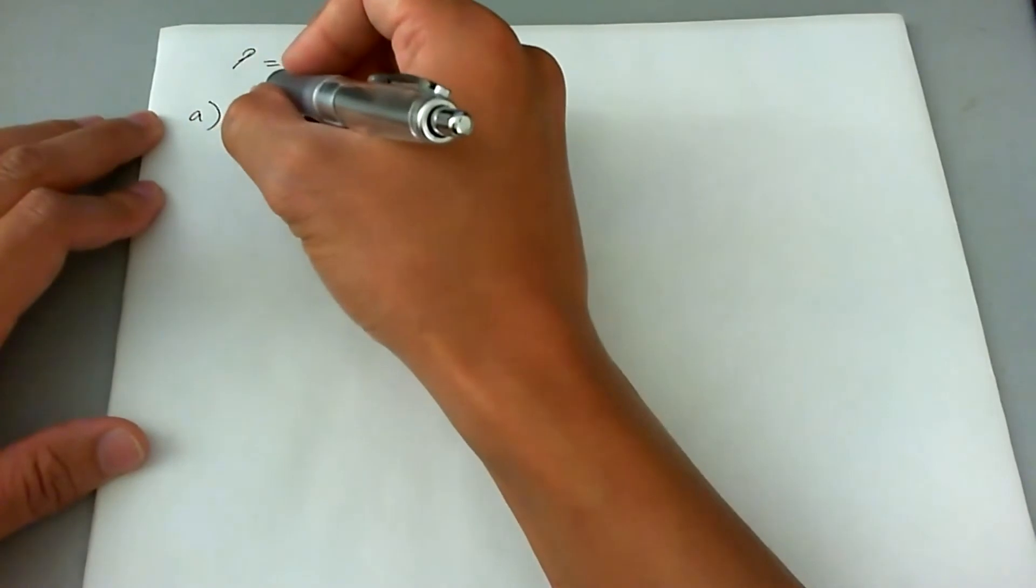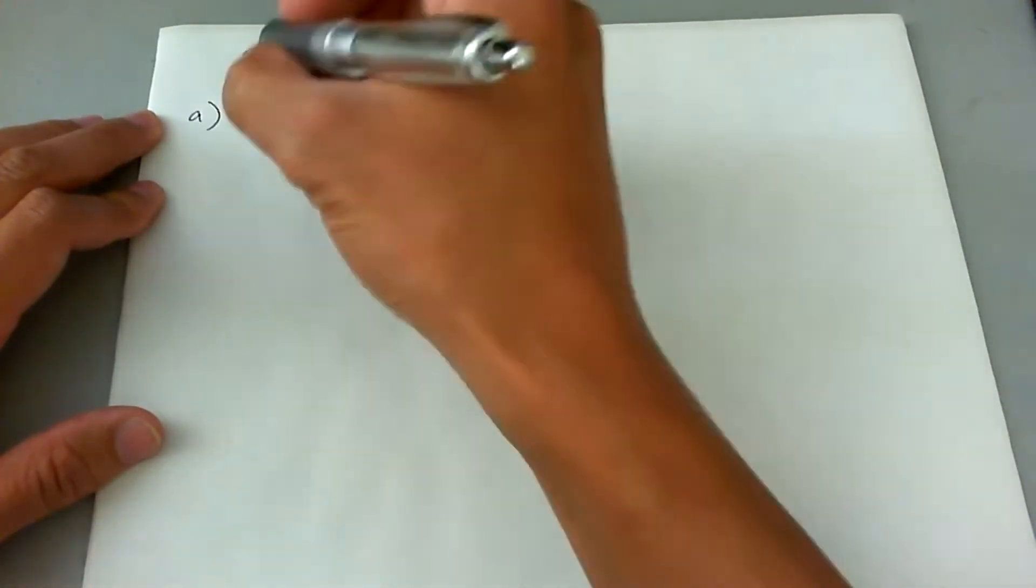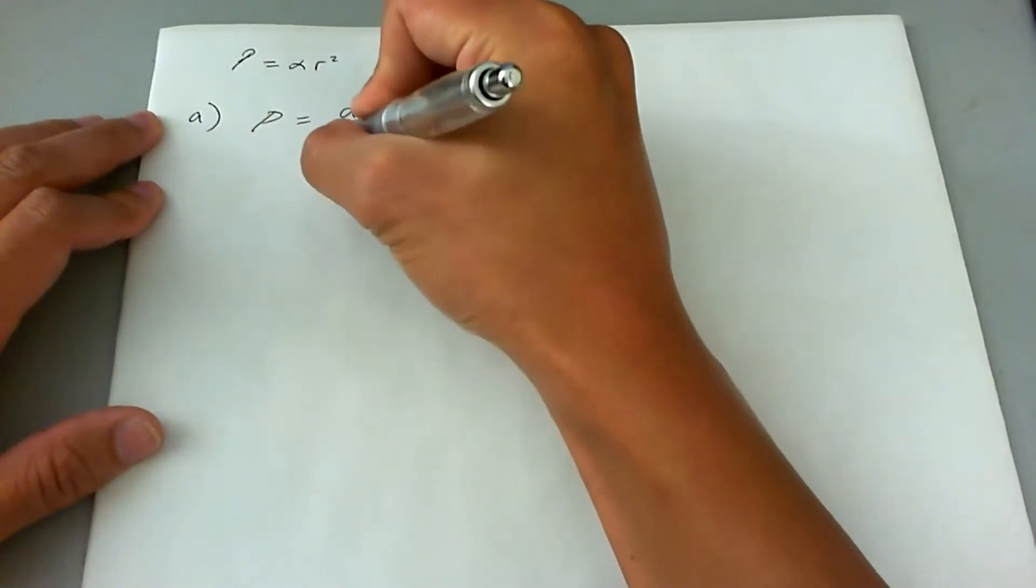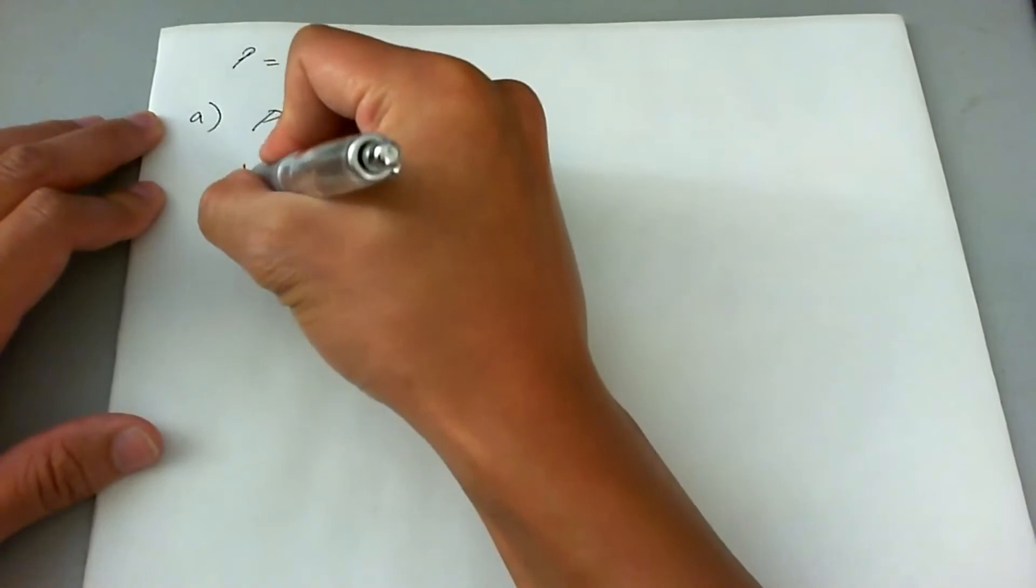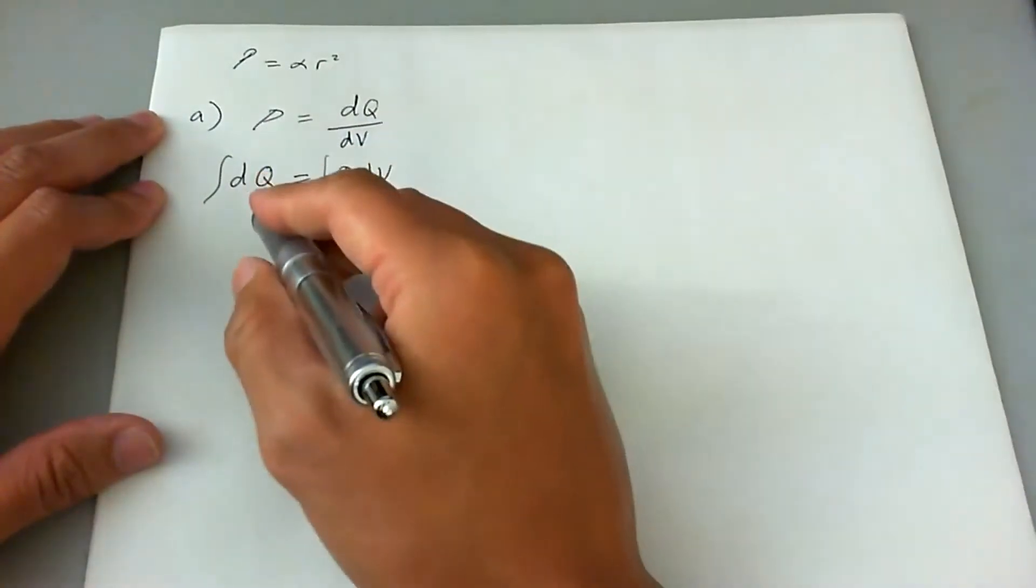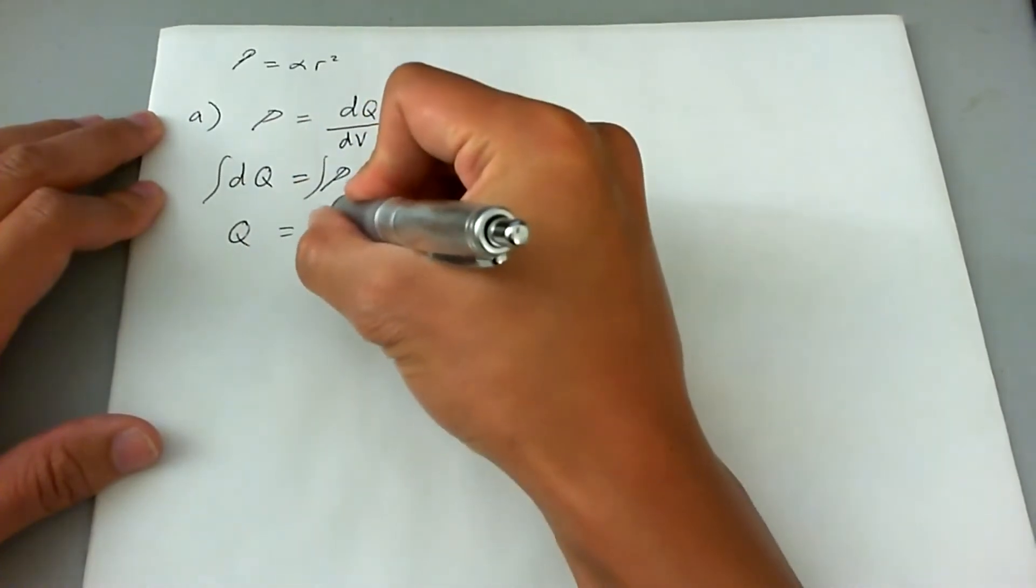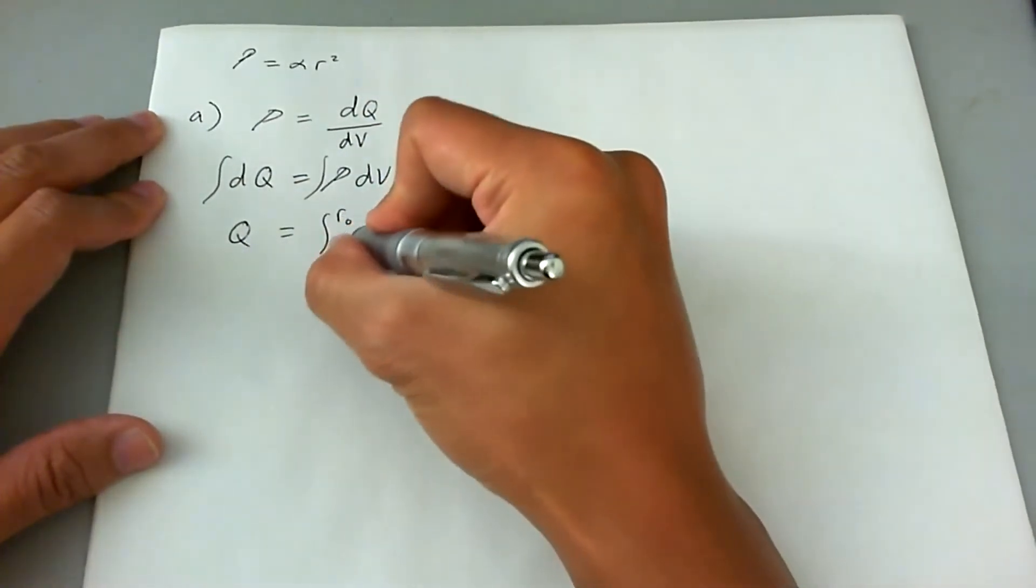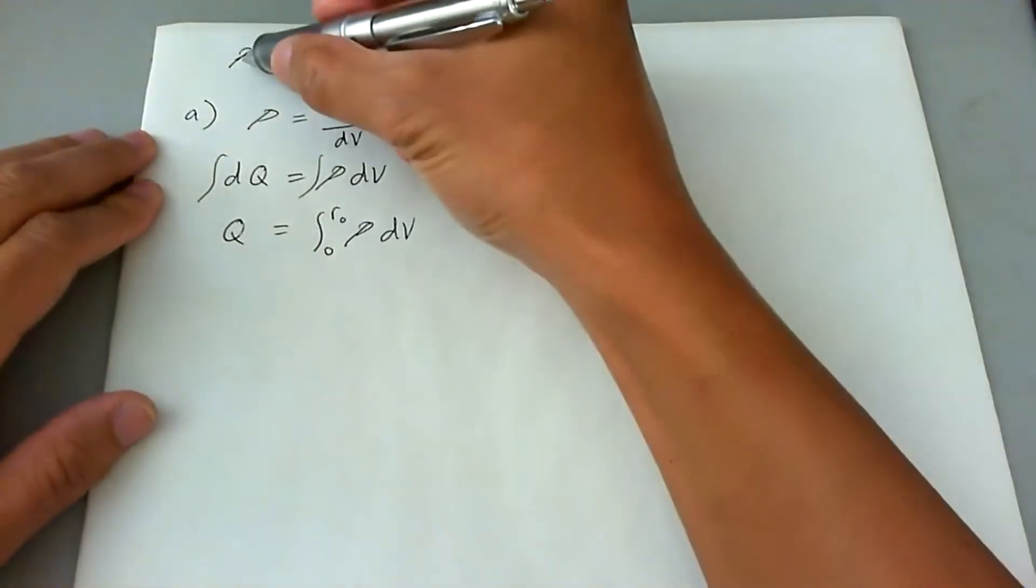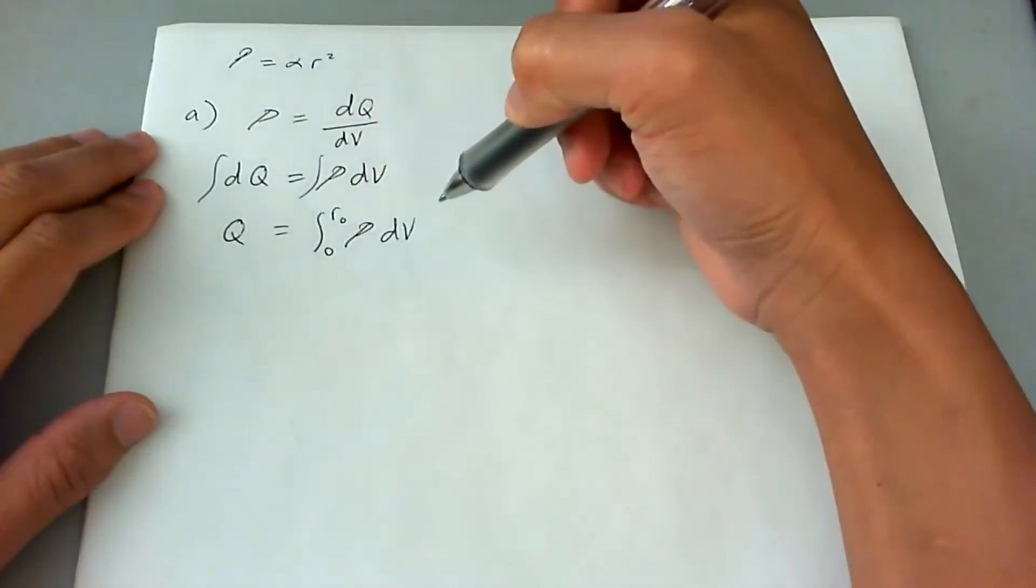So what we can do is we can make a Q term by just invoking what Q is relative to rho. So we know that rho, especially if it's a variable, is equal to DQ over DV. So therefore, if you want to get Q, it would be the integral of rho DV taking the integral of both sides. And for all Q inside a sphere, we're going to get Q is equal to, from zero to R naught, rho DV of a solid sphere. So now let's go ahead and plug in rho here and get alpha and R in terms of Q by solving this integral.